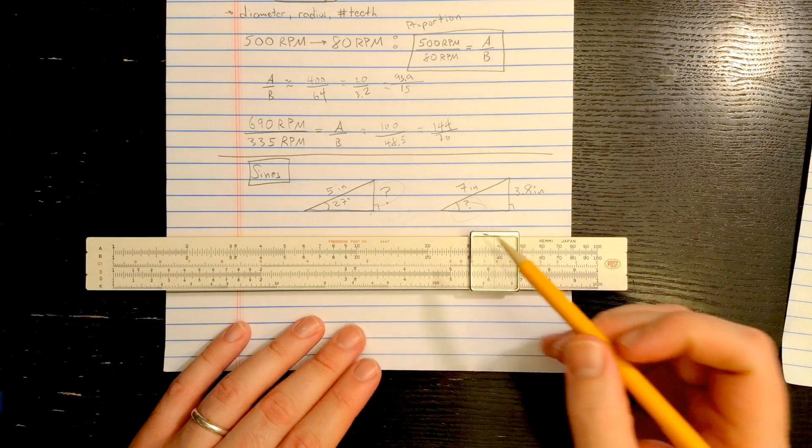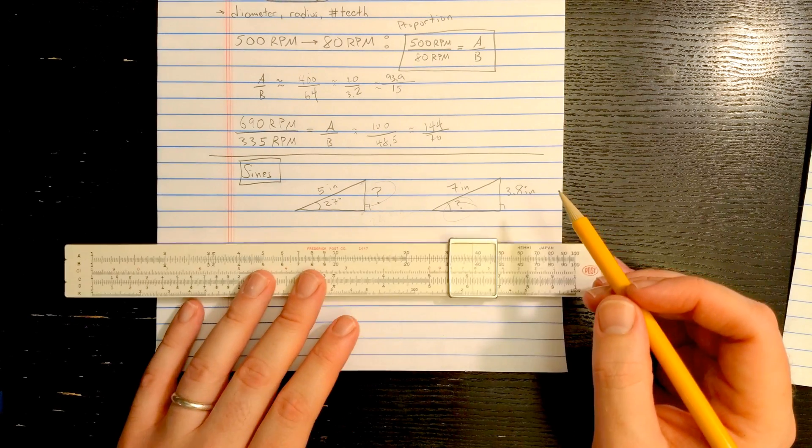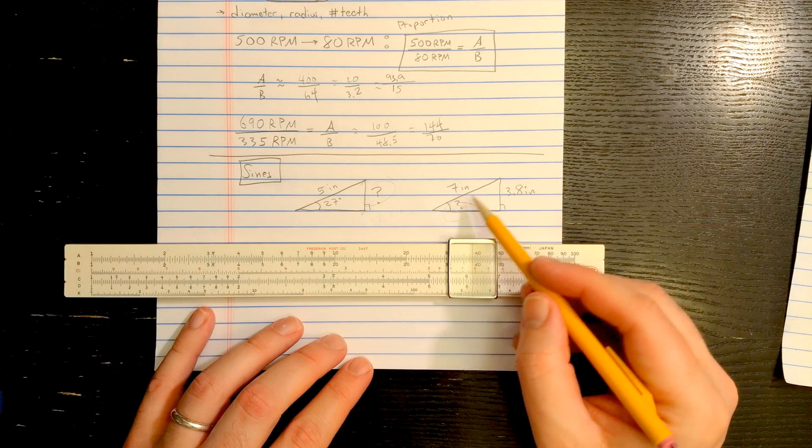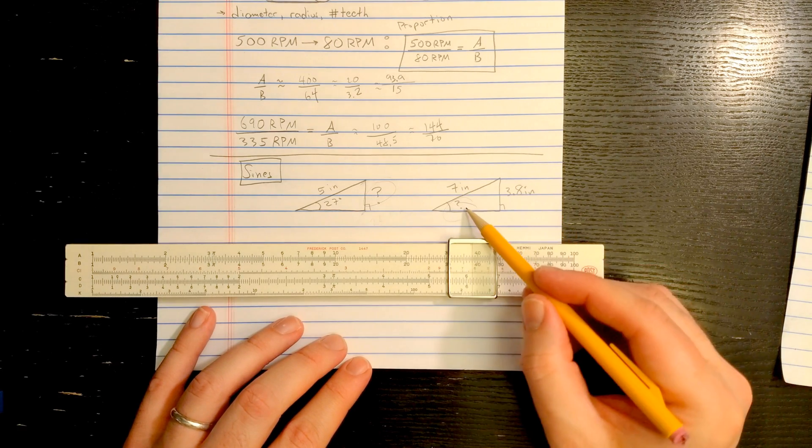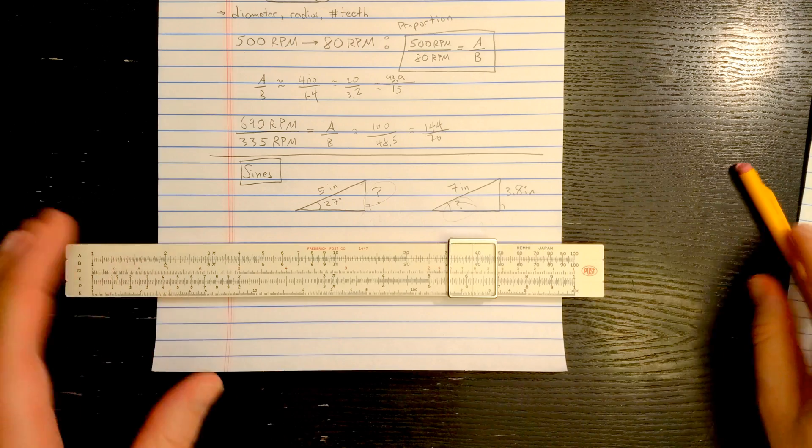Or, I guess you want the 27 degree angle. On the other hand, I'm not sure if this is useful, but you could ask the question in reverse. So you have a 7 inch bar, you've got a 3.8 inch height here, then what angle is that making? Let's solve both of those.